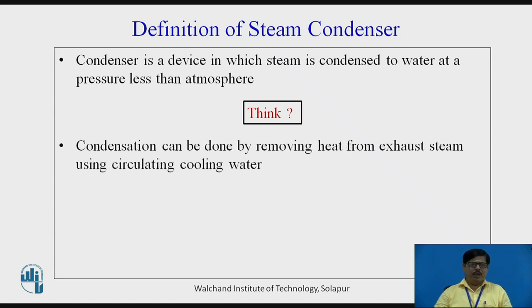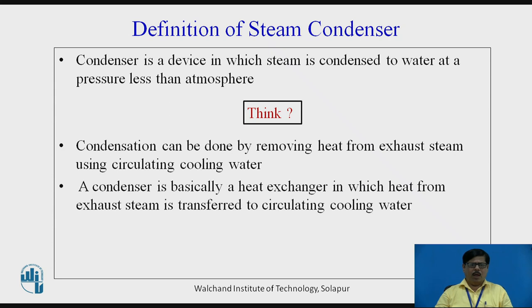Condensation can be done by removing the latent heat of evaporation from the exhaust steam coming out of the turbine or steam engine using circulating cooling water. After removing the heat, the exhaust steam gets converted into saturated liquid. A condenser is basically a heat exchanger in which the heat of steam is given to the circulating cooling water, and steam gets condensed from vapour state to liquid state, whereas the cooling water gets heated because it receives the heat from exhaust steam.